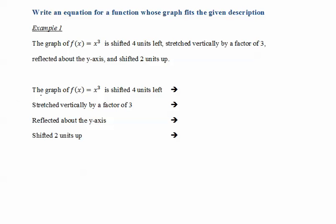We start with f(x) = x³, and then it says shifted four units left. If it is shifted four units left, the graph will be y = (x - 4)³. As we said in the previous video, (x - 4)³ means we take x³ and shift it to the left four units.